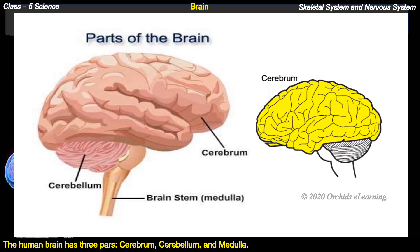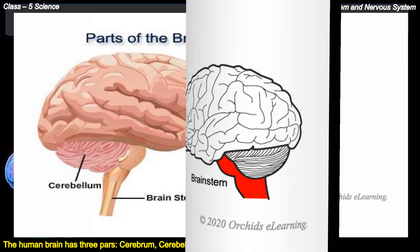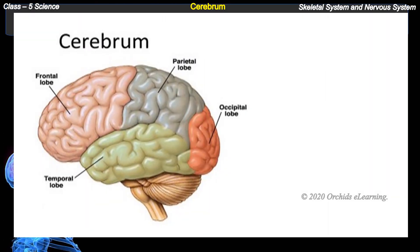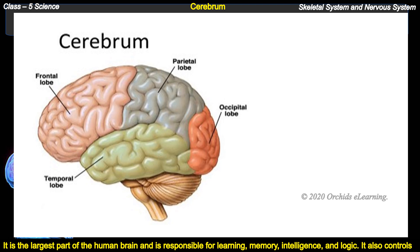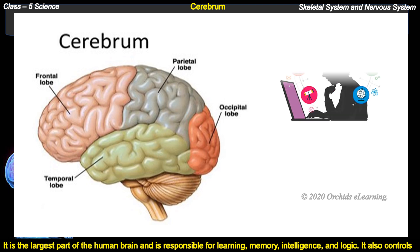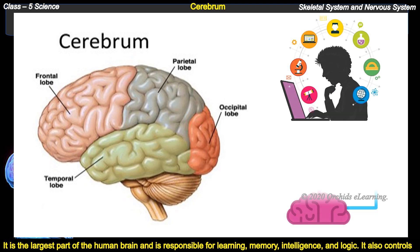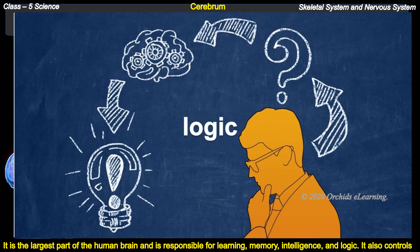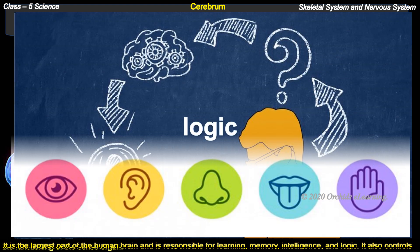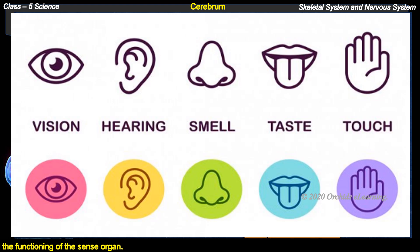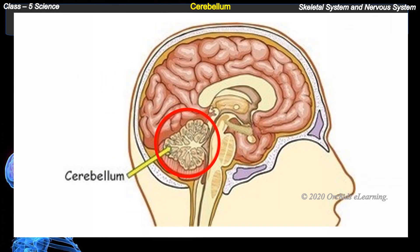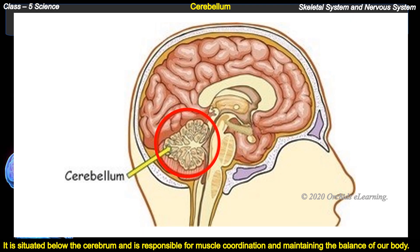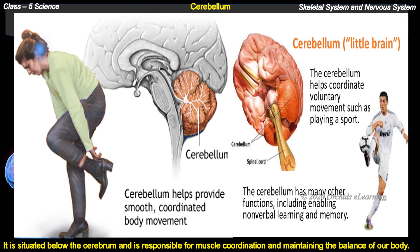Cerebrum: it is the largest part of the human brain and is responsible for learning, memory, intelligence, and logic. It also controls the functioning of the sense organs. Cerebellum: it is situated below the cerebrum and is responsible for muscle coordination and maintaining the balance of our body.